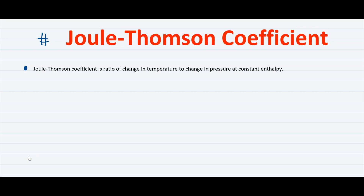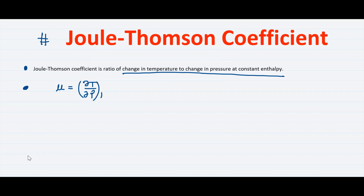First, let's look at the definition. The Joule-Thompson coefficient is the ratio of change in temperature to change in pressure at constant enthalpy H. It is denoted by the letter mu, which is equal to (∂T/∂P) at constant H. This is the basic equation for mu.